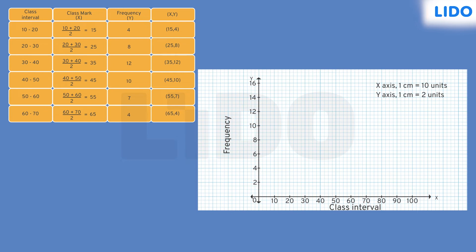Let's get started with plotting the coordinates. The first coordinate is 15, 4. On the coordinate plane, locate the coordinates 15 and 4 and mark it. The next coordinate is 25, 8. On the coordinate plane, locate the coordinates 25, 8 and mark it. The next coordinate is 35, 12. On the coordinate plane, locate the coordinates 35, 12 and mark it. Subsequently, the remaining coordinates are plotted for the further class intervals 40 to 50 and 50 to 60.